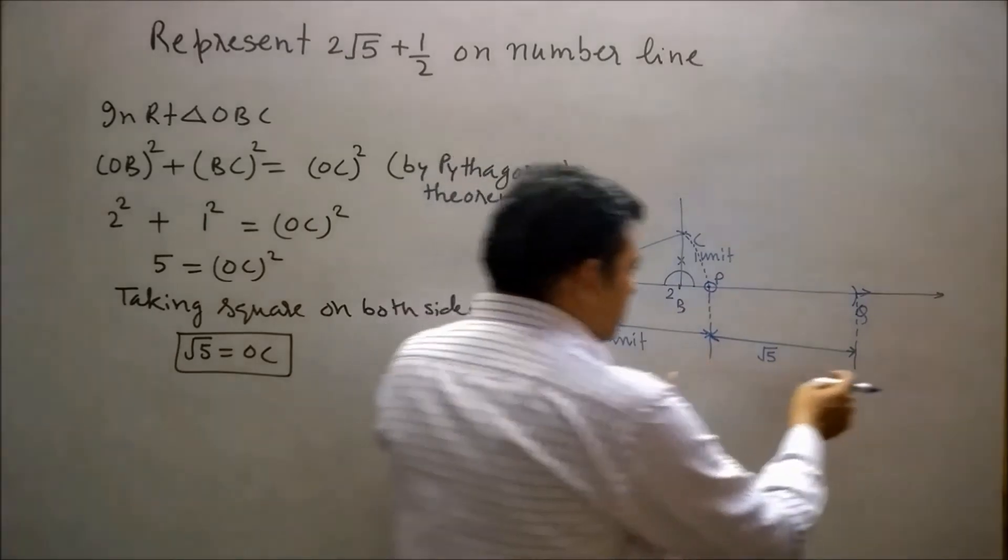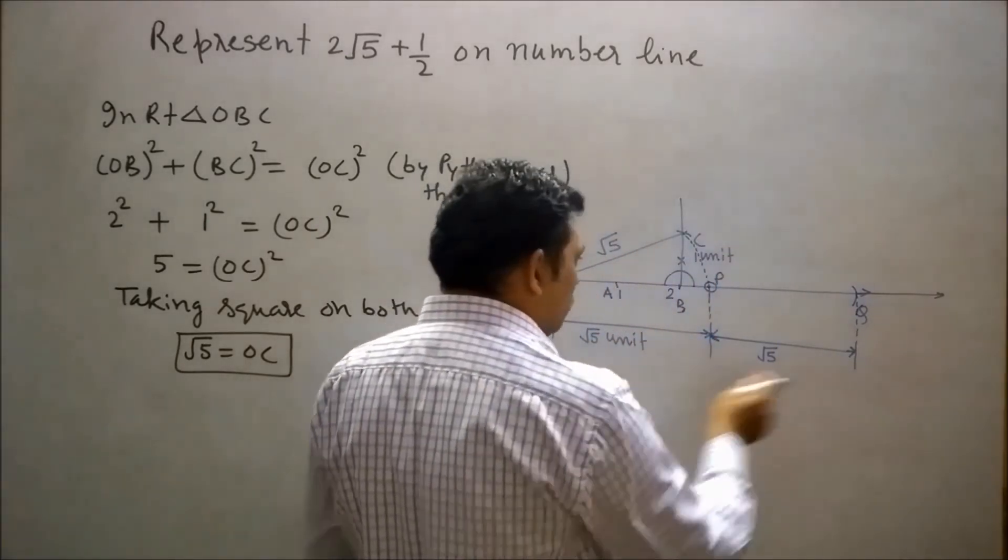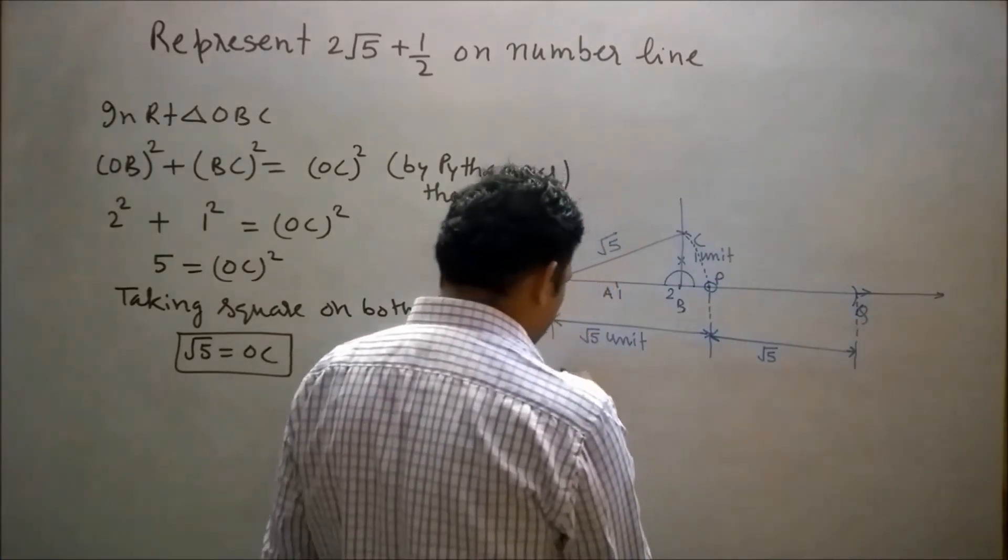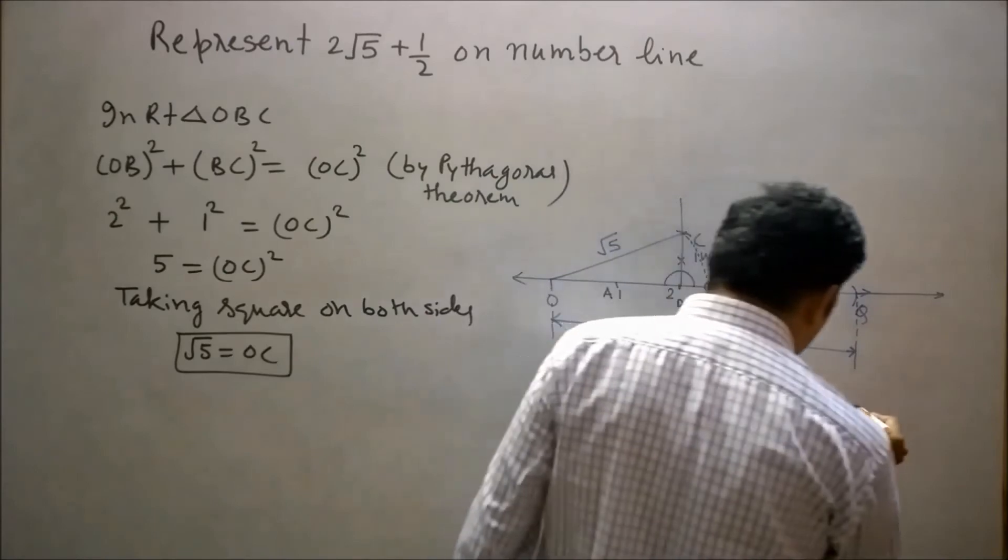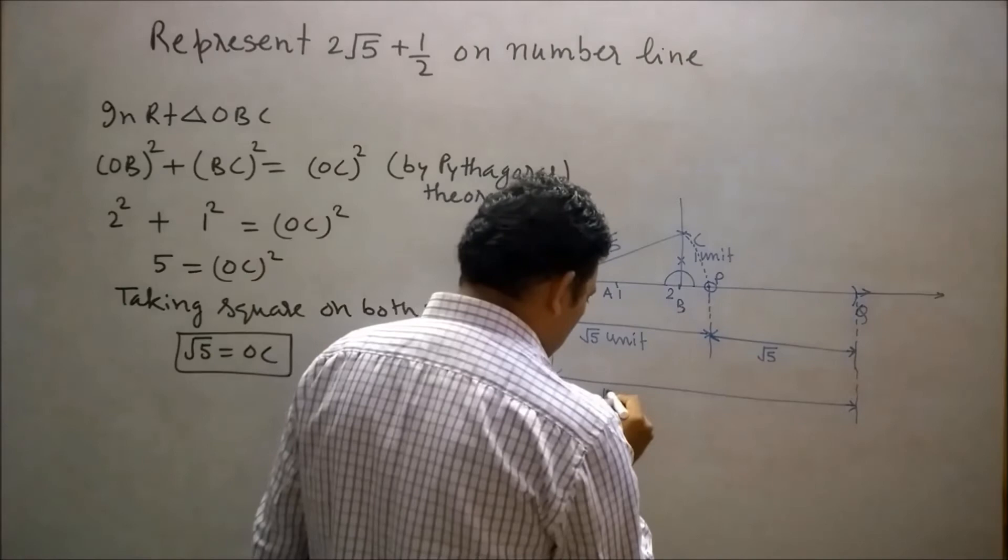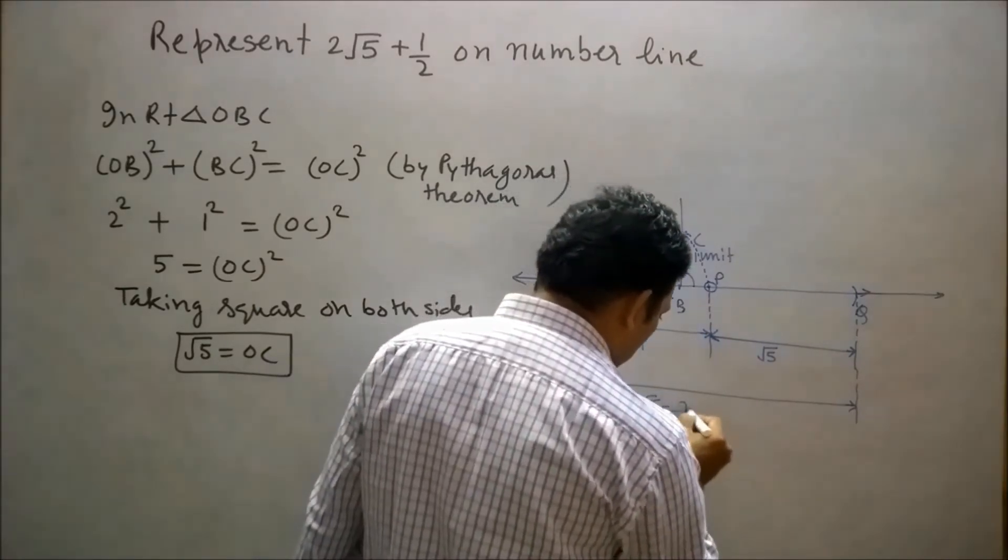Now OP plus PQ will equal √5 plus √5 equals 2√5. So OQ is equal to 2√5.